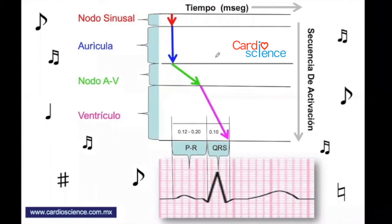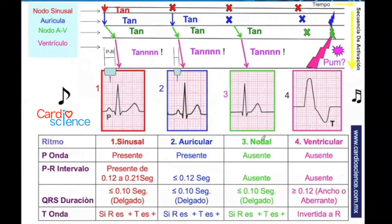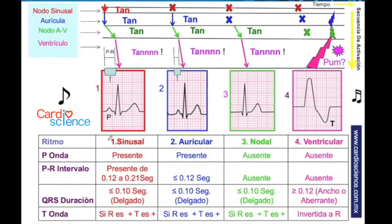Los cuatro ritmos son: sinusal, auricular, nodal y ventricular. En el ritmo sinusal hay onda P, el PR está entre 0.12 y 0.20, el QRS no es ancho, y la onda T va en la misma dirección que el QRS. El ritmo auricular es igual al sinusal, pero la onda P está pegada al QRS porque el impulso no se genera en el nodo sinusal sino en la aurícula, por lo que el PR es más corto.